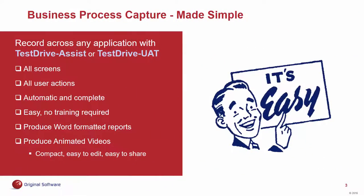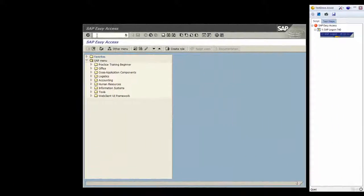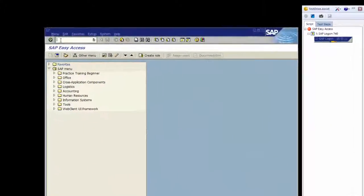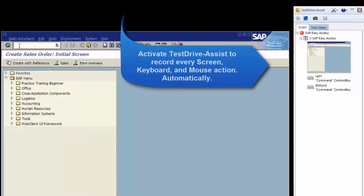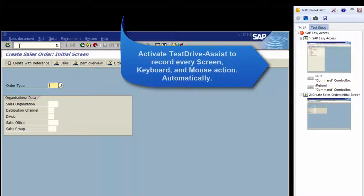Using original software solutions, you can easily extract subject matter expertise from your savvy business users and put it directly into a Word document, or better yet, produce videos that clearly communicate how the application behaves and how to use it to perform any business process. Simply activate Test Drive Assist or Test Drive UAT and let the business-savvy user step through a business process.